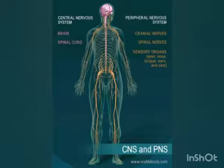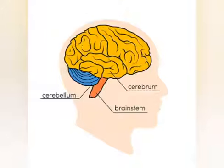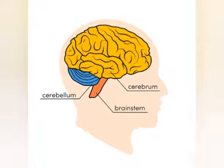The brain is a very important organ in our body. It controls movement and helps us to store information. The human brain has three parts: cerebrum, cerebellum, and medulla.